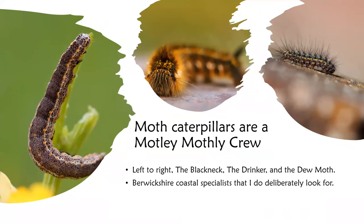The diversity of moth larvae could keep you going for many years. Each year I look for these three species in particular along the Berwickshire coast — all common species at a very local level. The blackneck and the dew moth are exceptionally scarce beyond a few miles of Berwickshire coastline. Blackneck grazes wood vetch, the drinker inhabits coastal grasslands, and the dew moth prefers crusty lichen plastered to sea-sprayed boulders.